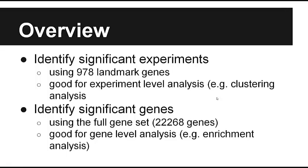Here's an overview of the method. The method has two parts. The first part is to identify significant experiments — experiments that are significantly different from controls. The second part is to identify significant genes, i.e., differentially expressed genes. For the first part, I use only the 978 landmark genes. For the second part, I use the full gene set, which is 20,000 genes. The first part is good for experiment-level analysis where you don't want to involve any genes, such as clustering analysis. The second part is good for gene-level analysis.